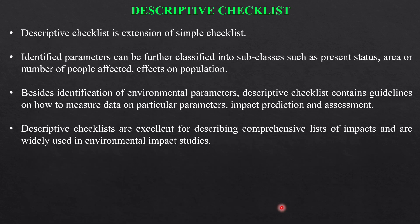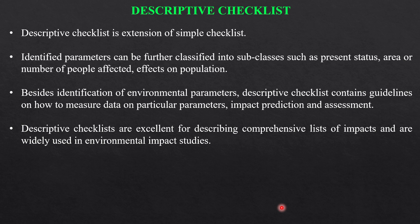The second type is the descriptive checklist, which is an extension of the simple checklist. Identified parameters can be further classified into subclasses such as present status, area or number of people affected, and effects on population. Besides identification, the descriptive checklist contains guidelines on how to measure data on particular parameters, impact prediction, and assessment. Descriptive checklists are excellent for describing a comprehensive list of impacts and are widely used in environmental impact studies.